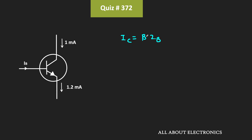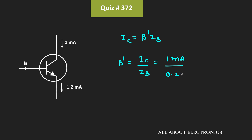Let's say this β is equal to β'. So with the given values of IC and IB, let us find this β'. This β' is equal to IC divided by IB. So IC is equal to 1 mA while IB is equal to 0.2 mA, which means β' is equal to 5.